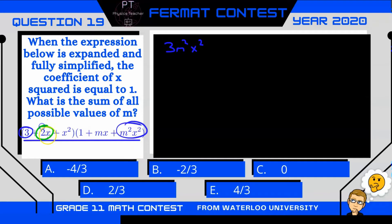Alright, what about 2x? 2x and 1 is not x squared. However, 2x and mx is. So let's write that one down. We're going to have plus 2m x squared.